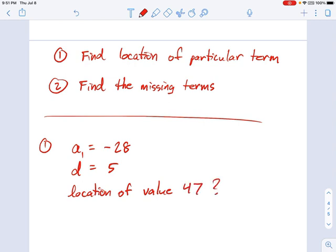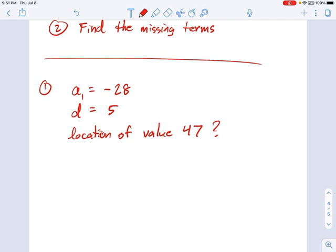I want to know location of the value 47 in the sequence. So, let's use our explicit formula. That's basically what you're going to use for everything. We just start with the one formula we know, aₙ equals a₁ plus n minus 1 times d, and I'm going to say aₙ equals 47.